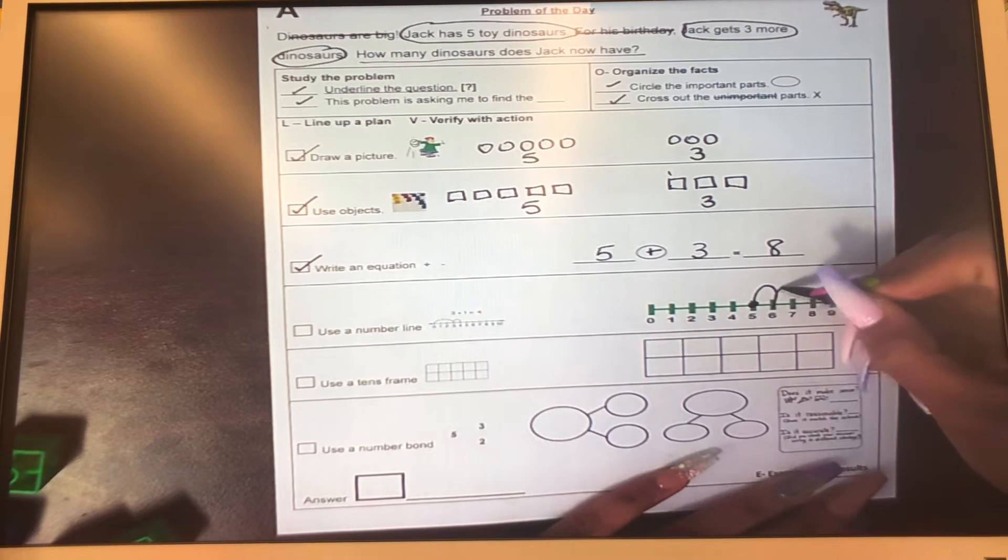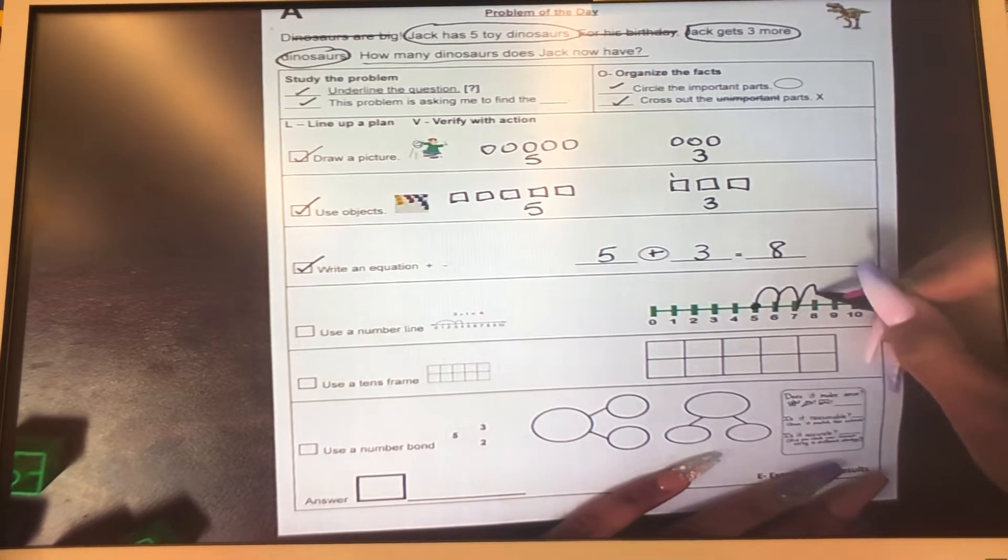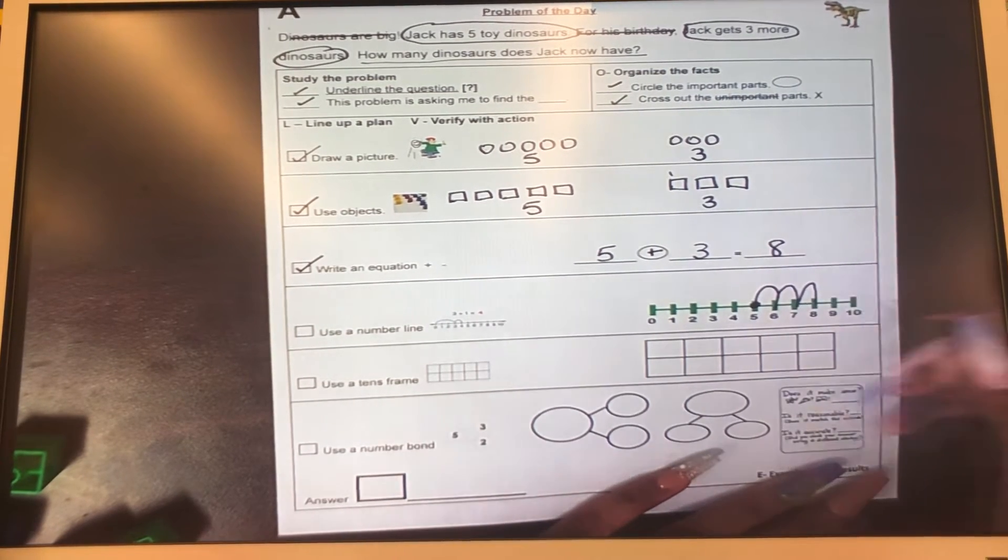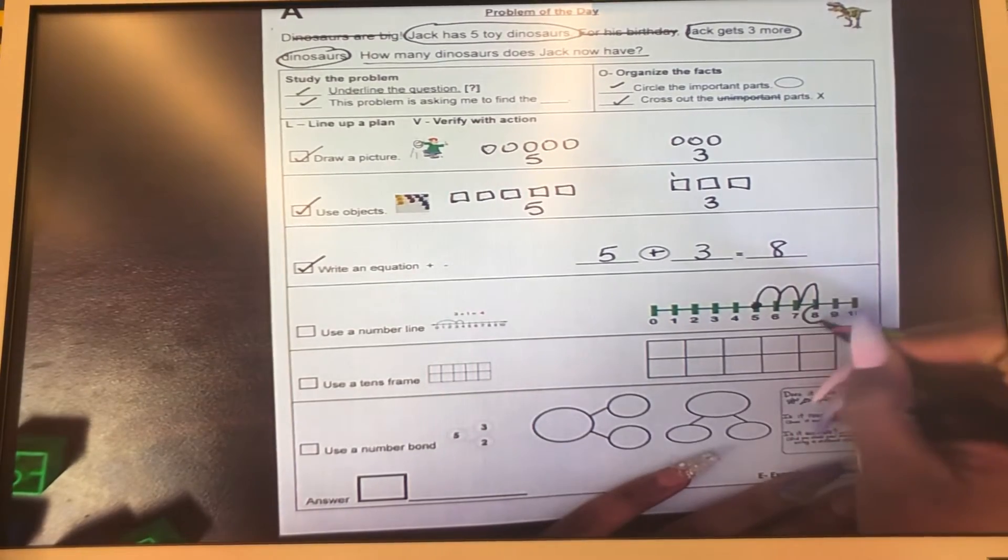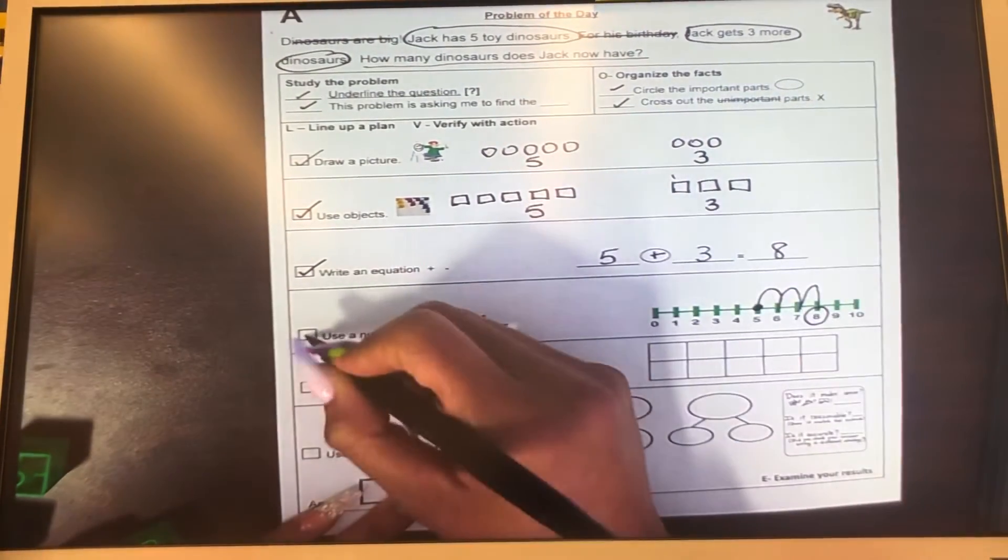I'm starting at the number five. One, two, three hops. Oh my goodness. I think we got the right answer. We landed on the number eight. Let's put a check.